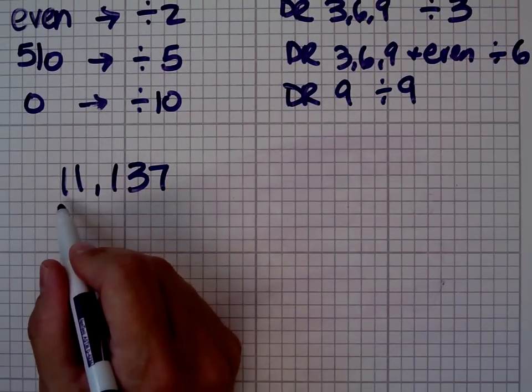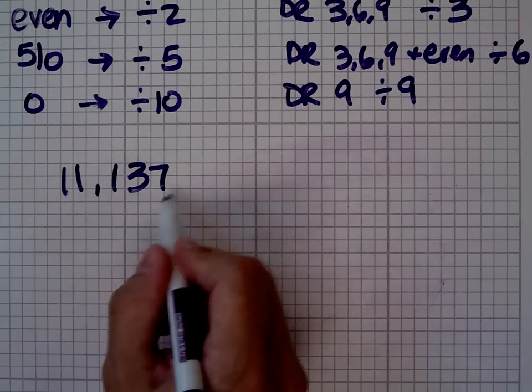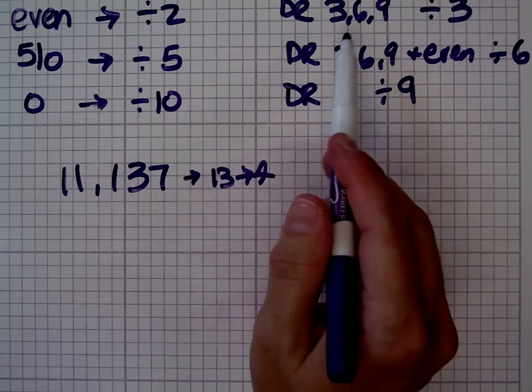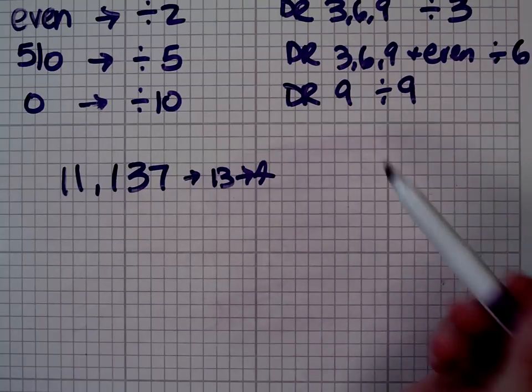but I can find out real easily. 1, 2, 3, 6, 13, 3 plus 1 is 4. I know immediately it is not divisible by 3. It is not divisible by 6. It is not divisible by 9,